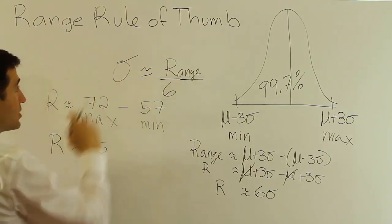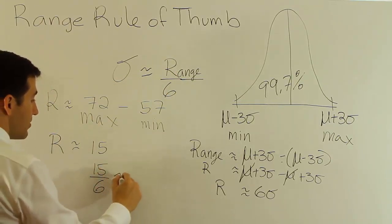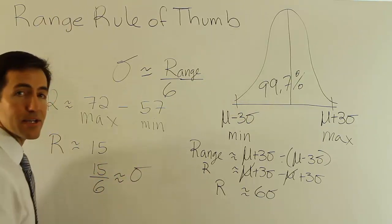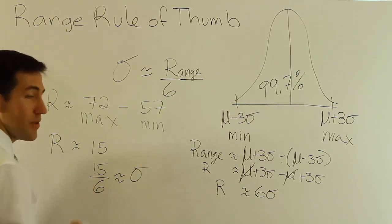So in other words, if I do 15 over 6, that should be approximately the standard deviation for female heights. What is 15 over 6? Well, 6 will go in there evenly twice. It will definitely go in there twice because that will go into 12 twice. I'll have 3 left over.